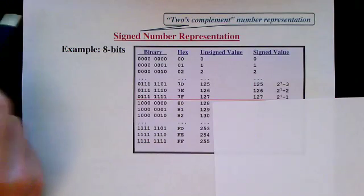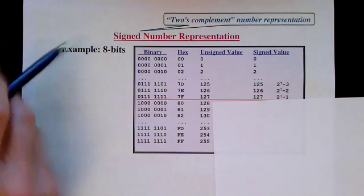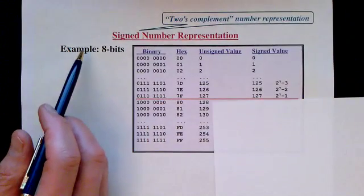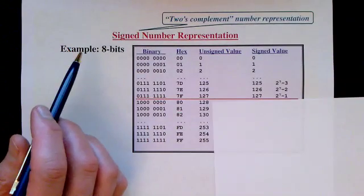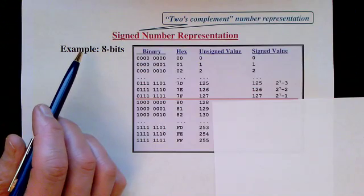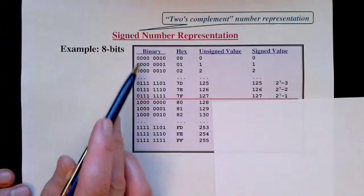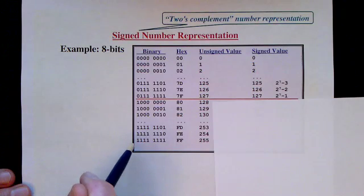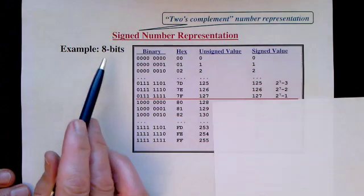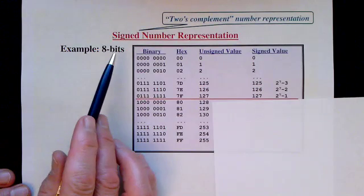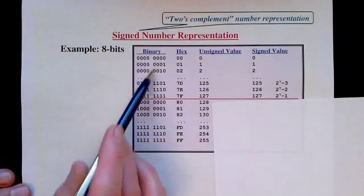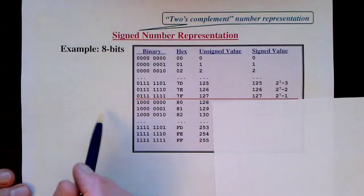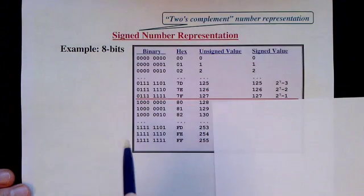Now let's look at another way of interpreting bit patterns as numbers, called signed number representation — also called two's complement number representation. We'll start with an example of only one byte, eight bits, which is more manageable, and then look at larger numbers in subsequent slides.